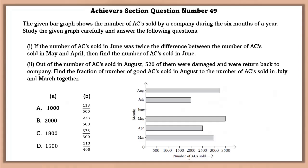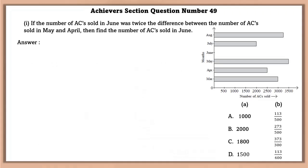Achievers section question number 49. The given bar graph shows the number of ACs sold by a company during the six months of a year. Study the given graph carefully and answer the following questions. First one, if the number of ACs sold in June was twice the difference between the number of ACs sold in May and April, then find the number of ACs sold in June. First of all, ACs sold in May is equal to 3,500. In April, 2,500. Twice the difference of May and April is equal to June, that is 2,000.